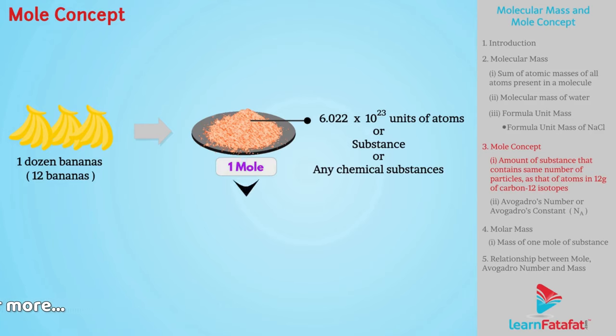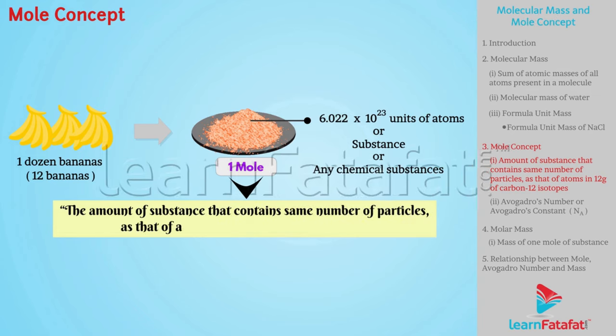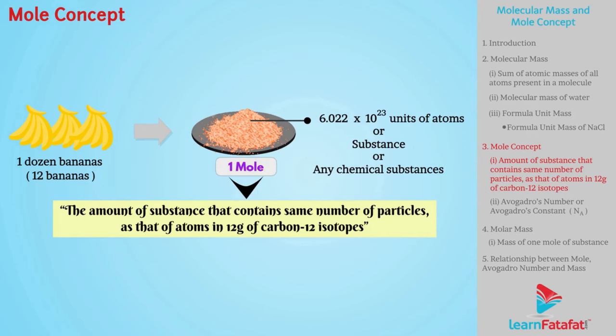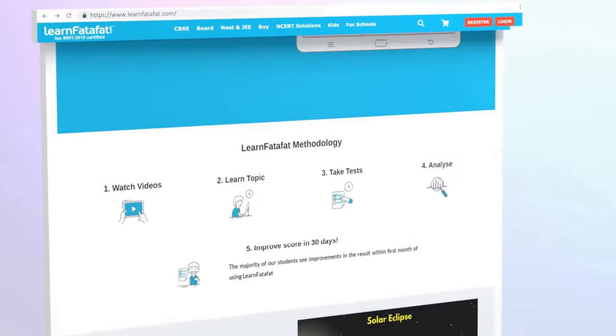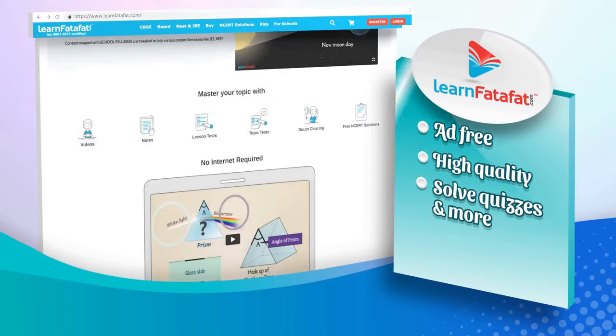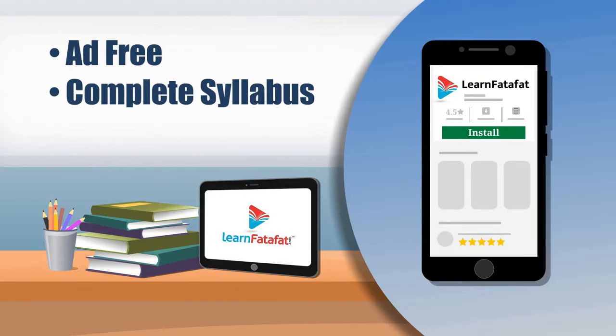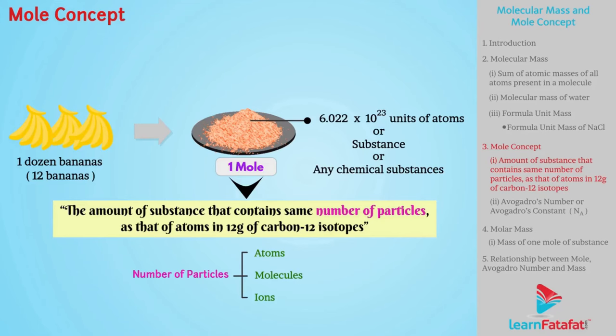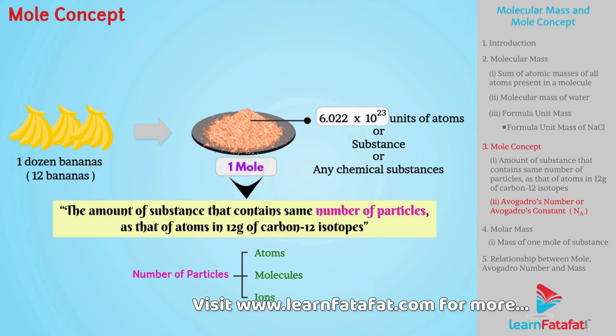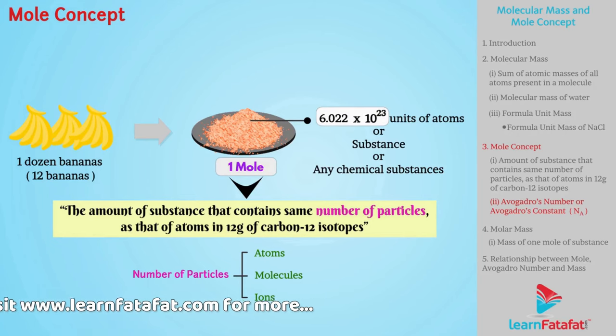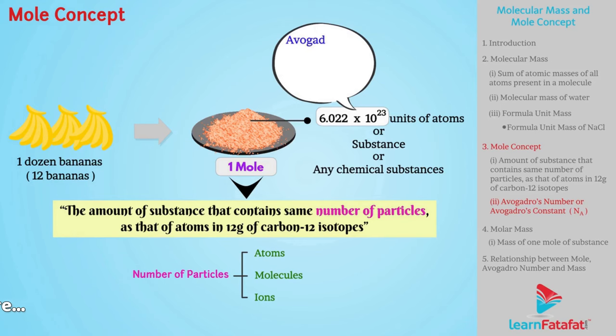Therefore, 1 mole is defined as amount of substance that contains same number of particles as that of atoms in 12 gram of carbon-12 isotope. This number of particles can be atoms or molecules or ions. Number of particles present in 1 mole of substance has fixed value. That is 6.022 into 10 raise to 23. This value is known as Avogadro's number or Avogadro's constant denoted by Na.